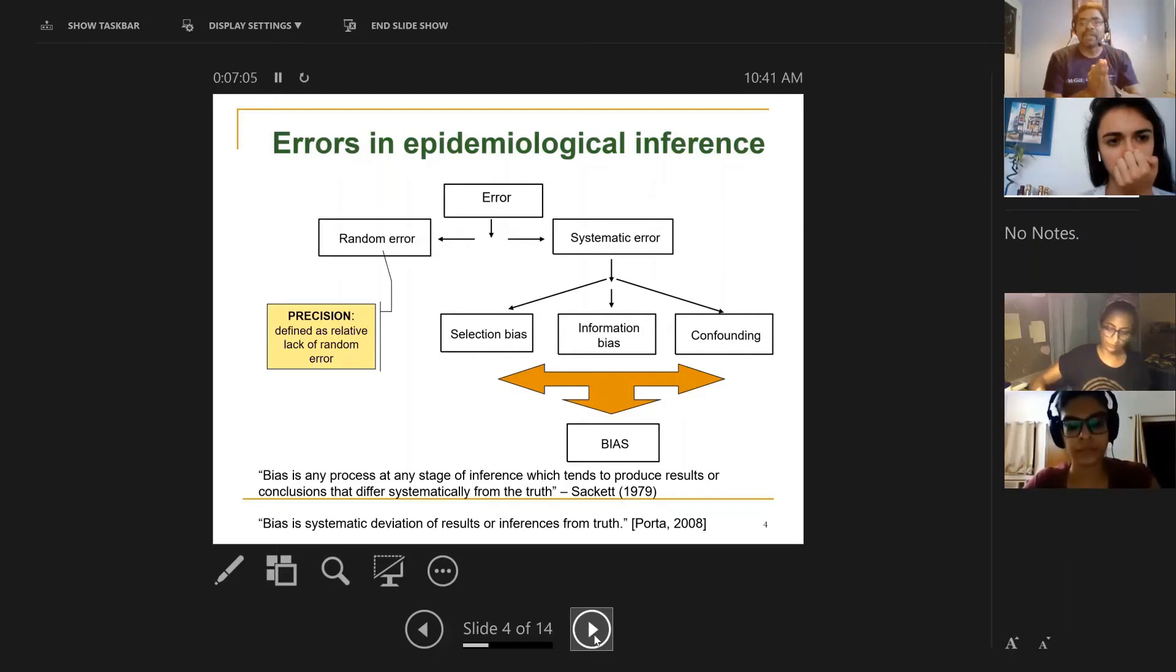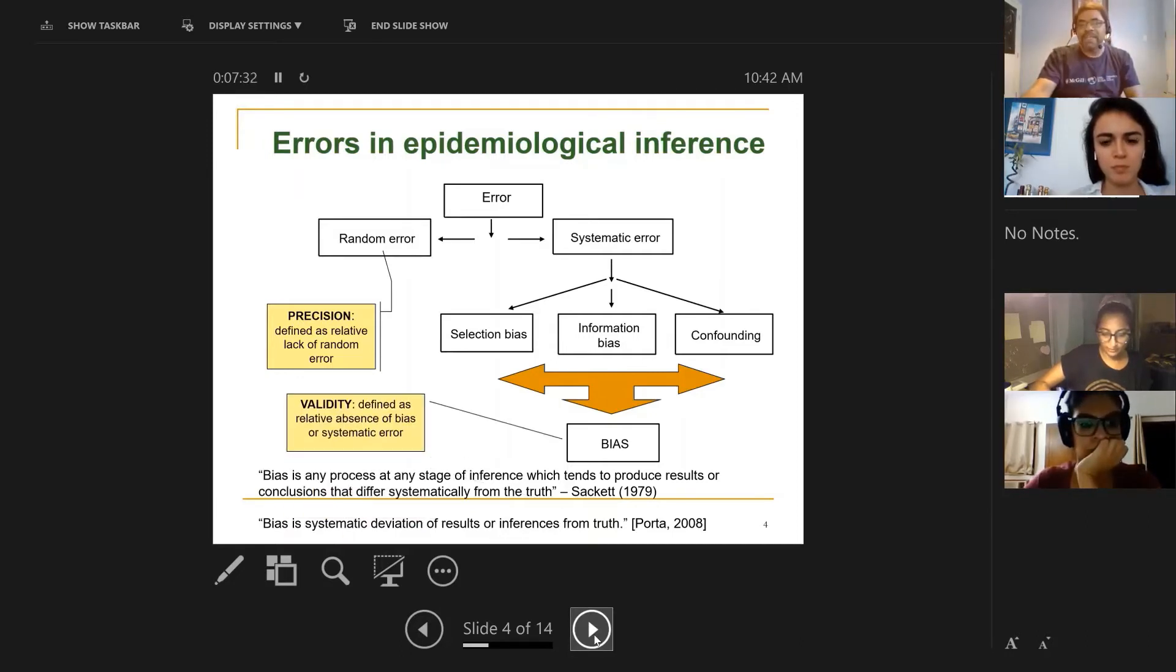When you say I have a precise estimate of the rate ratio, prevalence, incidence, whatever, that means you have reduced random error. You have made the confidence interval as narrow as you can possibly do. Our ability to control random error buys us precision. Precision means a narrow confidence interval, a small amount of random error. Our ability to deal with bias is something called validity. Validity means have we removed sources of systematic error so that whatever we get is likely to be closer to the truth. Ideally, a study should be both valid and precise.